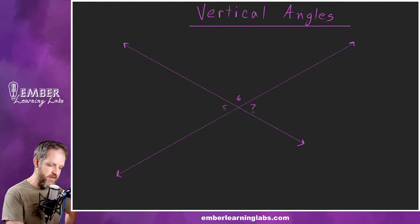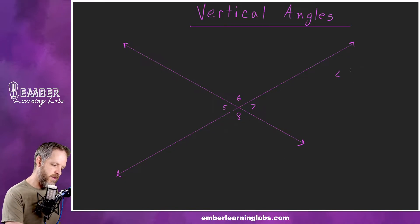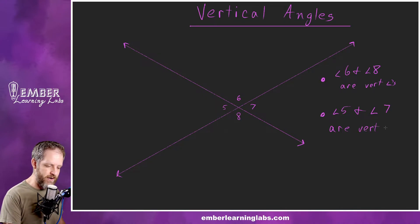We're going to use this picture to describe vertical angles. We've got a couple of lines here intersecting at this point. We're going to label our angles. Let's label these as angle five, six, seven, and eight. So there are two pairs of vertical angles in this picture. Angle six and angle eight are vertical angles, and angle five and angle seven are vertical angles.